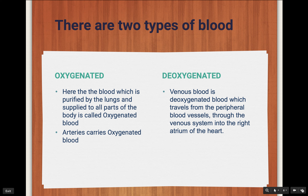Deoxygenated blood is also called venous blood. It is transported through peripheral blood vessels and flows through the venous system into the right atrium of the heart. The deoxygenated blood is transported by veins.